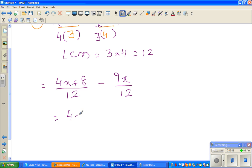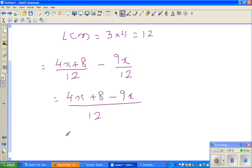So this is 4x plus 8 minus 9x over 12. So let me group the like terms. So this is 8 plus 4x minus 9x over 12. So the ultimate answer is 4x minus 9x is minus 5x over 12.